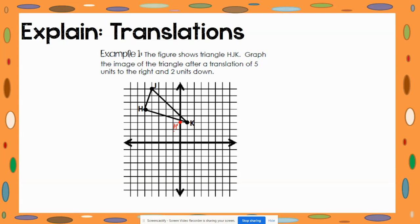Now we have to do the same thing with points J and K. Put your pencil on point J. Move it five units to the right — you should notice you're just past the y-axis. Then move two units down. Here's the new point, so this will be called J prime.